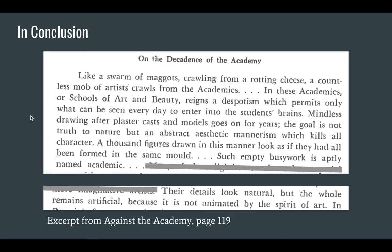In conclusion, I wanted to point out this excerpt from On Decadence of the Academy — Jacques-Louis David in his Critique of the Salons: 'Like a swarm of maggots crawling from a rotting cheese, a countless mob of artists crawl from the academies. In these academies or schools of art and beauty reigns a despotism which only permits what can be seen every day to enter the students' brains. Mindless drawing after plaster casts and models go on for years. The goal is not truth to nature, but an abstract aestheticism or aesthetic mannerism which kills all character. A thousand figures drawn in this manner look as if they all had been formed in the same mold. Such empty brushwork is aptly named academic. Their details look natural, but the whole remains artificial because it's not animated in the spirit of art.'